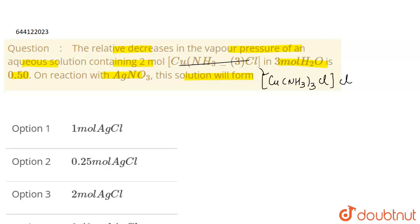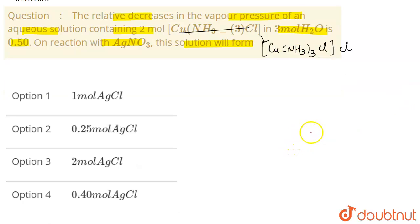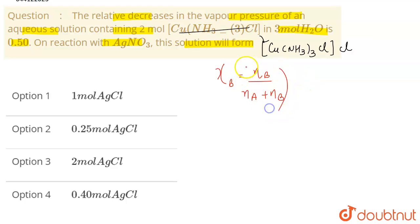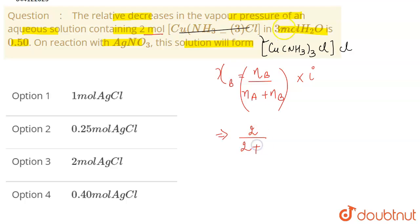So you are given the relative lowering in vapor pressure as 0.50. On reaction with AgNO₃, this solution will form — now the first thing is to find out the Van't Hoff factor. The mole fraction is given as the number of moles of solute divided by the total number of moles (nA plus nB), multiplied by i. The number of moles of solute is 2, so this will be 2 divided by (2 plus 3) into i.